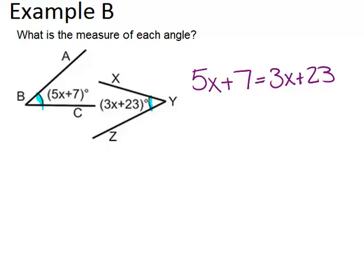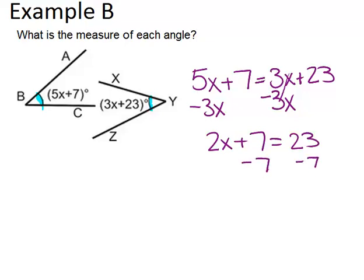Now you just use your algebra skills to solve this equation. So we want to get X by itself on one side. So I'd minus 3X from both sides. That gives me two X's on the left and no more X's on the right. Now I'll minus 7 from both sides to get X by itself. And you end up with 2X equals 16, which means X equals 8.